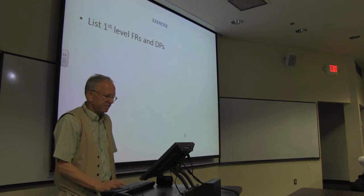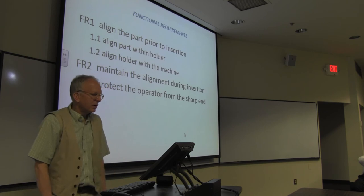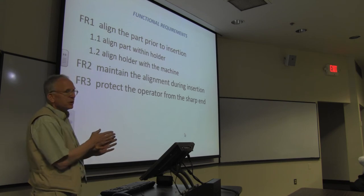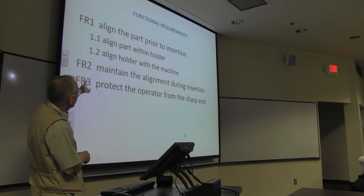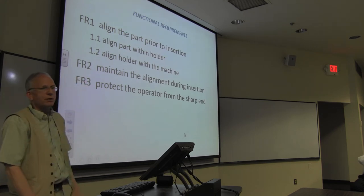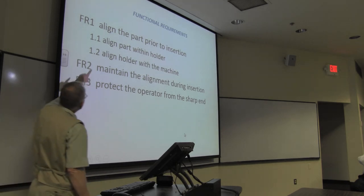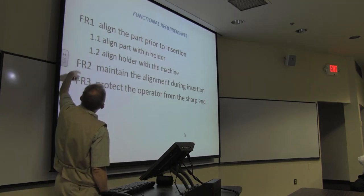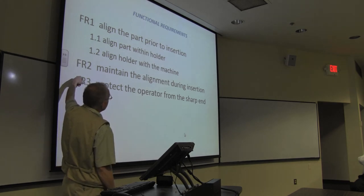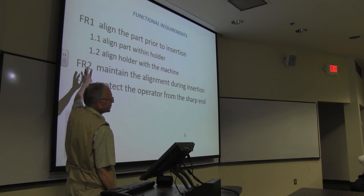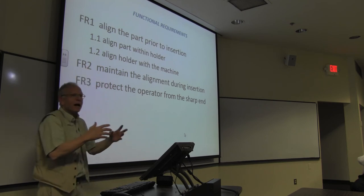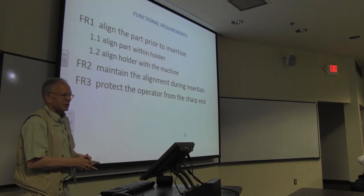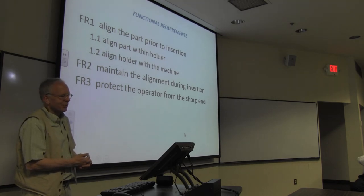They had already been into it for a couple months, arguing about which kind of robot to get. They were seriously behind on filling orders. So let's get, what are the FRs? First level: one, two, three. We need to align the part for the machine prior to insertion. We need to maintain that alignment during the insertion. And then we need to protect the operator from the sharp end. So align the part with the holder, and then align the holder with the machine. This was really fun to do because I had an idea what the solution was, but their engineers did it. Their engineers were the kind who really argued a lot. And the owner of the company was there and said, 'I can't believe what you just did with this.'